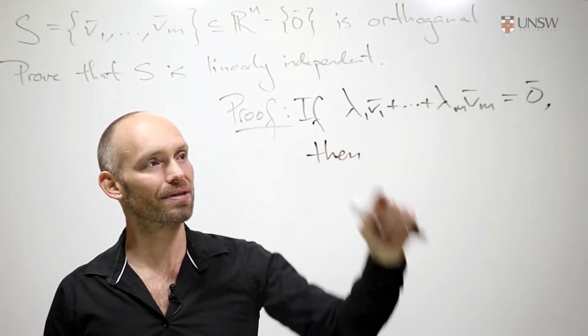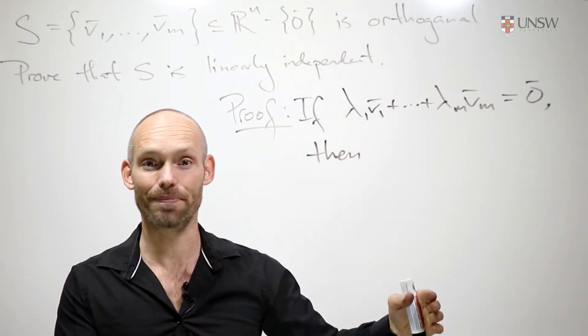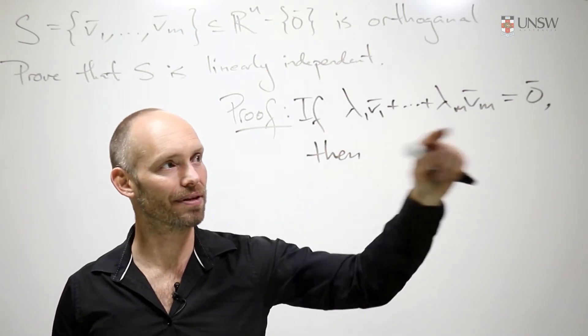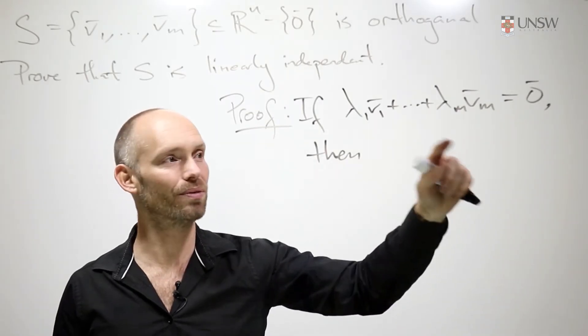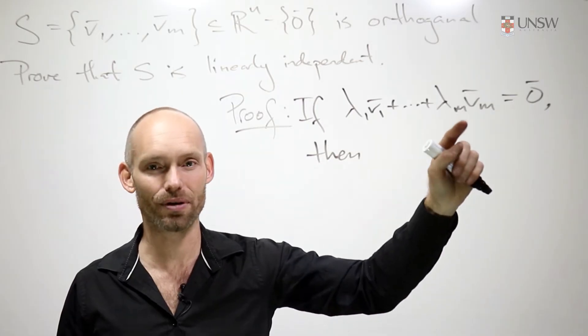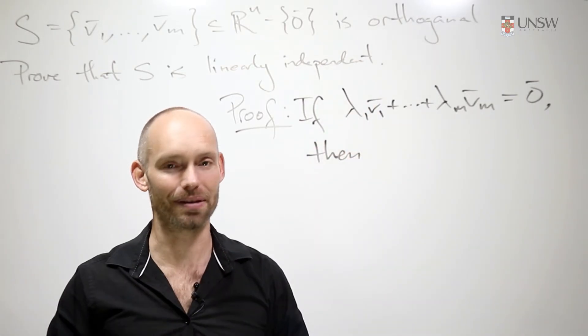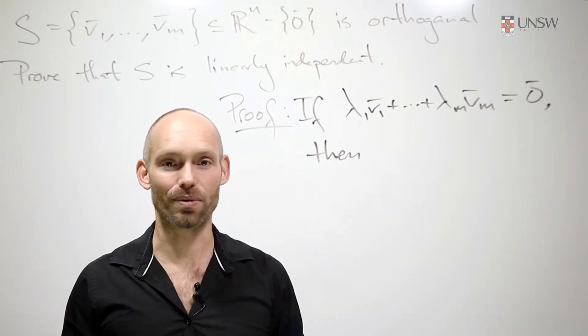Now, what we want to prove is that each of these λs has to be zero whenever this linear combination is zero. There's only one way for this linear combination to be zero, and that's exactly when all the λs are zero. And that's one way that we can show that S is linearly independent. So that's what we're going to do.